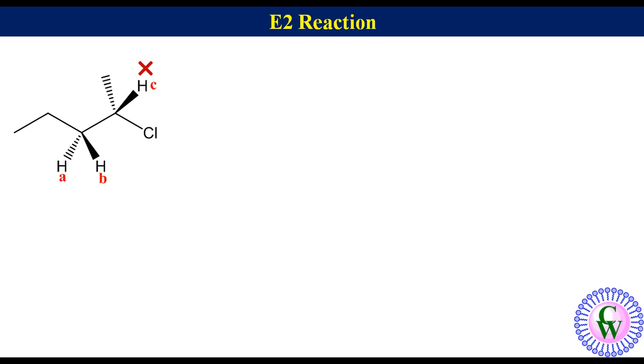For the E2 reaction to occur, the beta hydrogen should be anti to the leaving group. There are two possible conformations for the E2 reaction involving HA and HB. In one, HA, and in the other, HB will be anti to the chloro group.